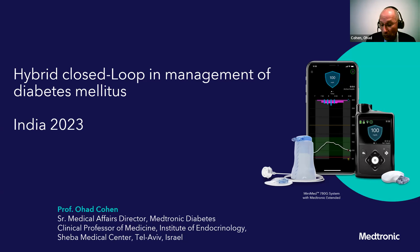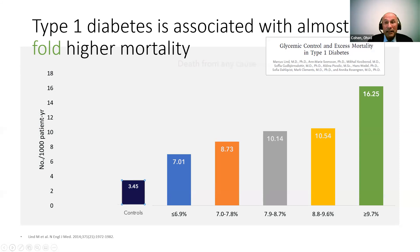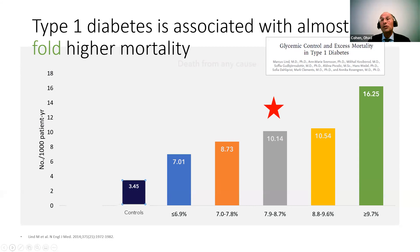We'll talk about automation in the therapy of type 1 diabetes, but we have to understand why it is so important to use technology in the treatment of type 1 diabetes. We always discuss morbidity and mortality, complications of type 1 diabetes, but we have to understand that at the end of the day, type 1 diabetes still shortens life. This is from the Swedish cohort showing life expectancy — how many years are lost for those with type 1 diabetes, according to glycemic control.